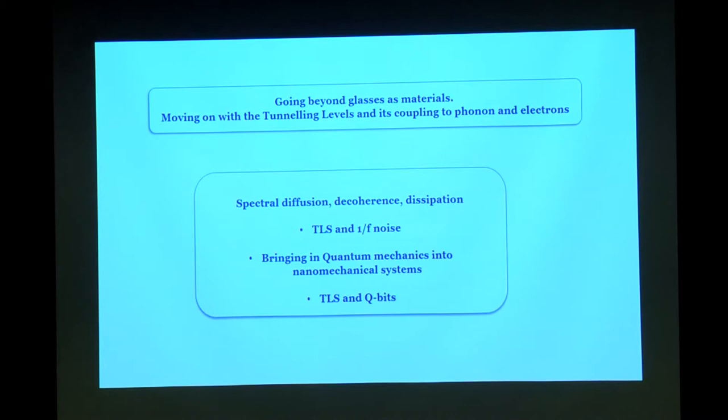Well, I now stop here talking about the classical two-level system and bring in some of the Tony's observation. So I can live with glasses. I can live with disordered solid and TLS system. But then I'll be living in a cocoon. What Tony did, basically, he said, listen, there are glasses, universal behavior, but the main takeaway is that you have a two-level system which is interacting with thermal bath. Take the physics from it and see whether one can apply it in other systems or other types of physics. And the important idea that came out of it is spectral diffusion, decoherence, and dissipation. And the three areas where it has started having direct impact is two-level system and one by F noise. This I will not talk about. This is an idea on its own thing. This is essentially bringing quantum mechanics into a nanomechanical system and TLS and qubit. I'll just touch on these three things if Krishnamurti shoots me down.